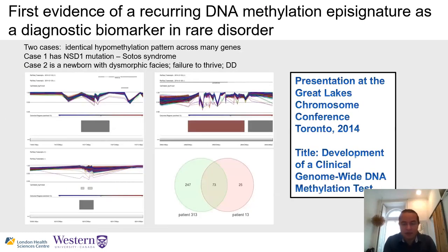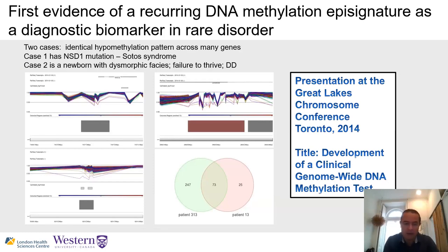The first evidence for an epi-signature came from an early study of genome-wide methylation profiles in patients who had undergone microarray copy number testing. Two patients deviated from reference samples — one had SOTOS NSD1 mutation, and the other was a newborn without a genetic diagnosis at the time. We followed up and found an NSD1 mutation, indicating for the first time that we can potentially infer an underlying genetic condition based on the DNA methylation profile alone.